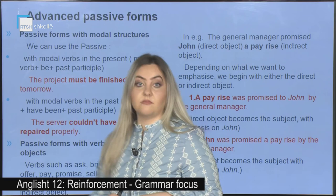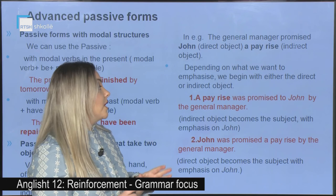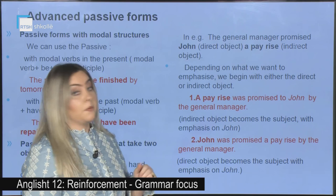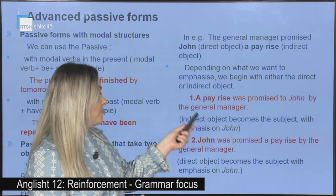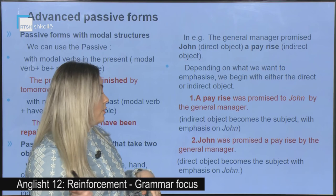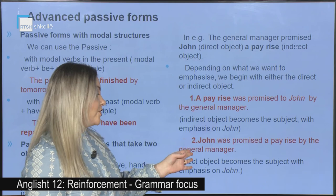Depending on what we want to emphasize, we begin with either the direct or indirect object. Example: The general manager promised John a pay rise. Becomes: A pay rise was promised to John by the general manager — the indirect object becomes subject, emphasizing John. Or: John was promised a pay rise by the general manager — the direct object becomes subject, also emphasizing John.